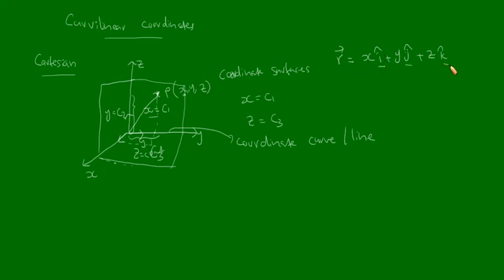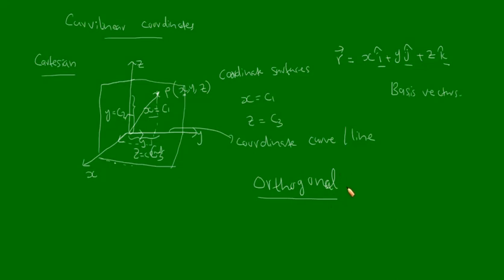Here i-cap, j-cap, and k-cap unit vectors are called the basis vectors. Now in the case of the Cartesian coordinate system, the coordinate surfaces intersect at right angles. If the coordinate surfaces intersect at right angles, then the curvilinear coordinate system is said to be an orthogonal curvilinear coordinate system.